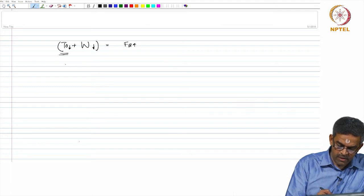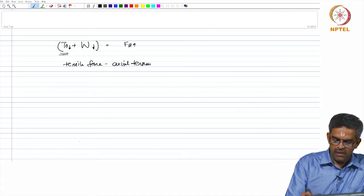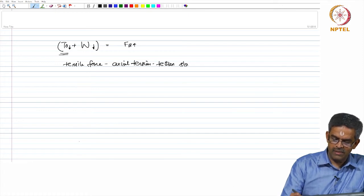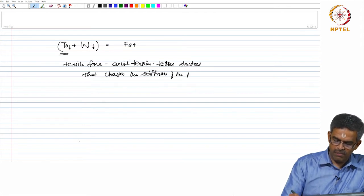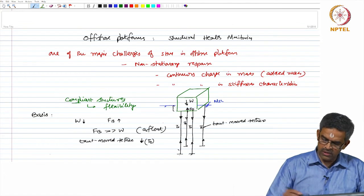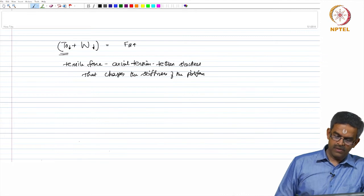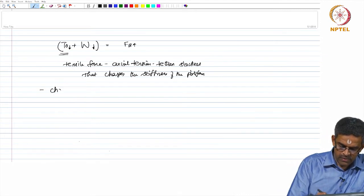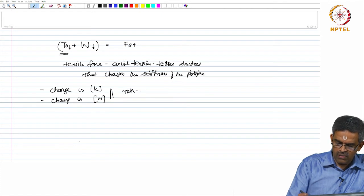Now, interestingly when the tensile forces or axial tension in the tethers slackens that changes the stiffness of the platform. So, that is what we said there is a continuous change in stiffness characteristics and continuous change in mass characteristics which essentially are non-stationary.